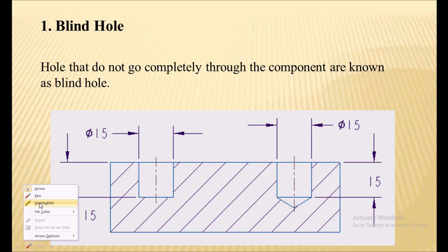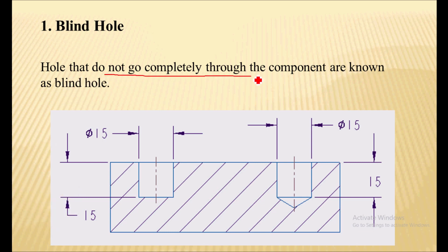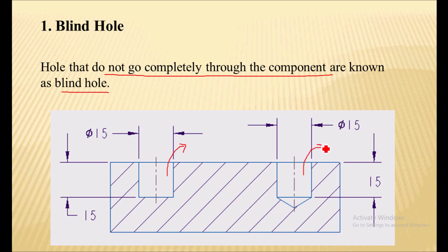The first type of hole is the blind hole. A blind hole does not go completely through the component. There are two types: one produced by a boring operation, and one produced by a drilling operation. In the drilling case, you can see a drill-type shape at the bottom. This is the blind hole.